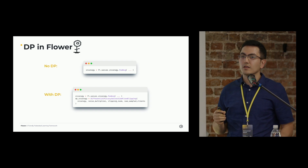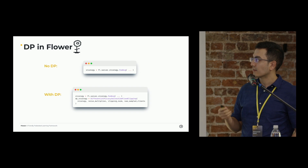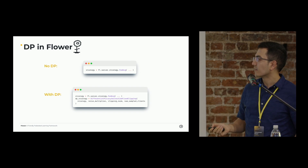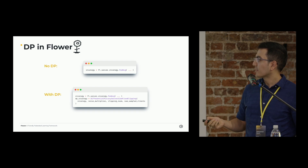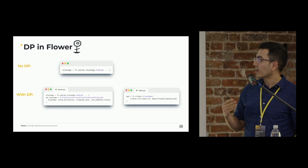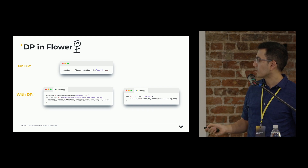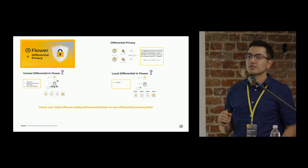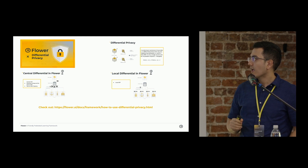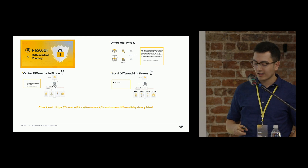Just to show how easy it is to use differential privacy in Flower: before, you would create strategies and use them for training. But now, you just use a wrapper around your strategy and pass the DP hyperparameters. This is for server-side clipping. If you want to use client-side clipping, in addition to those wrappers, you just need to pass the clipping mod to the mod attribute in the client app. I highly suggest checking the documentation on the Flower website. Now that we know how Flower addresses privacy, let's see how it addresses security.